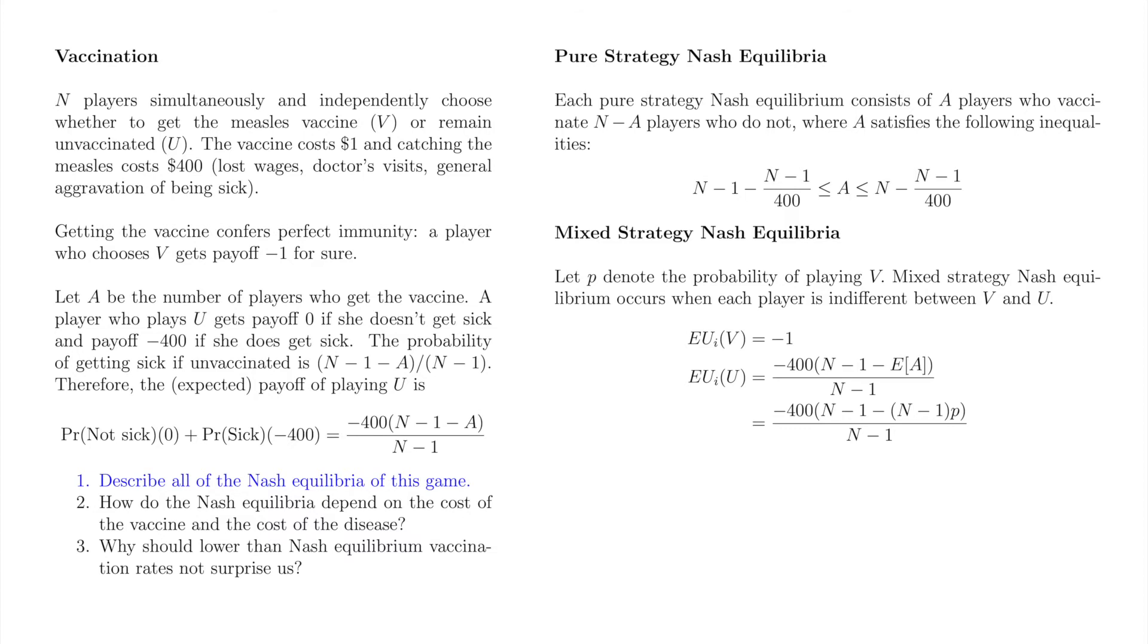One way to frame the idea of a mixed strategy is to imagine dividing each player into smaller pieces according to the weight the mixed strategy associates to each pure strategy. In this vaccination game, that means each player is divided into two pieces, one of size P who vaccinates, and one of size 1 minus P who does not. Since there are N minus 1 other players, the expectation of A is equal to (N-1) times P, i.e. the number of players of size P who vaccinate.